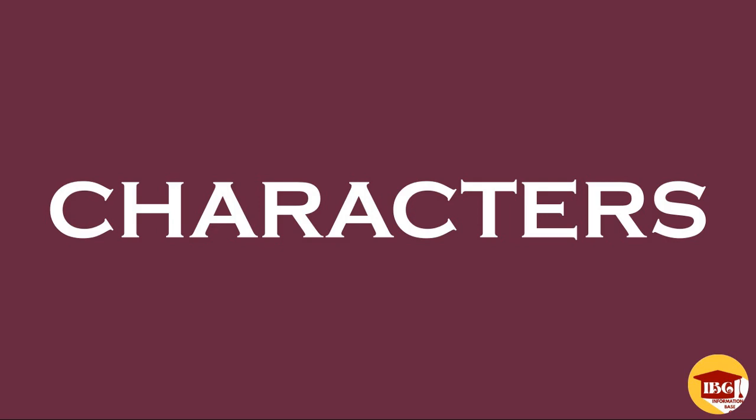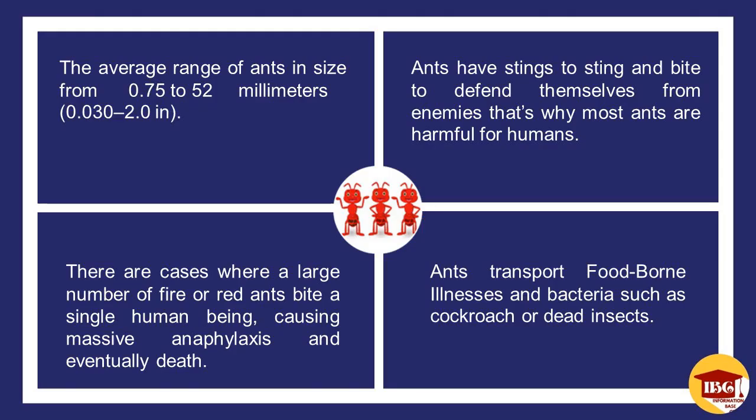First of all, the physical character of the ants: ants are small. The average range of ants in size is from 0.75 to 52 mm, or 0.030 to 2.0 inches. Ants have stings to sting and bite to defend themselves from enemies, which is why most ants are harmful to humans. There are cases where a large number of fire or red ants bite a single human being, causing massive anaphylaxis and eventually death. Otherwise, ants transport foodborne illnesses and bacteria such as cockroach or dead insects.